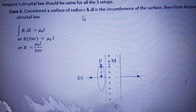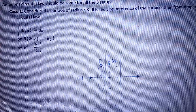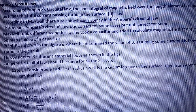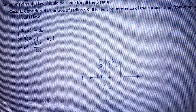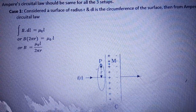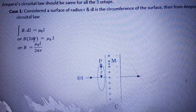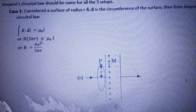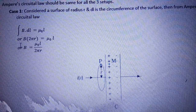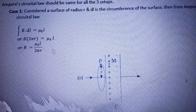Case 1: Consider a surface of radius r; dl is the circumference of the surface. Ampere's circuital law में B·dl = μ₀i। Circumference of the circle = 2πr, so B × 2πr = μ₀i, which gives us B = μ₀i / 2πr। यह हमारे पास Case 1 का result है — ampere के according magnetic field की value यह वाली है।